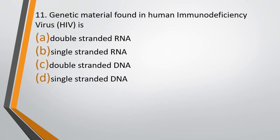Question number 11. Genetic material found in human immunodeficiency virus is: double-stranded RNA, single-stranded RNA, double-stranded DNA, or single-stranded DNA. The correct answer is Option B — single-stranded RNA.